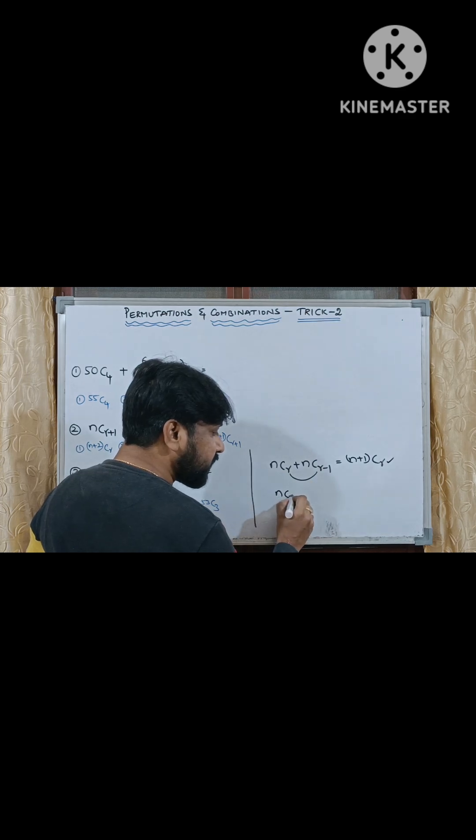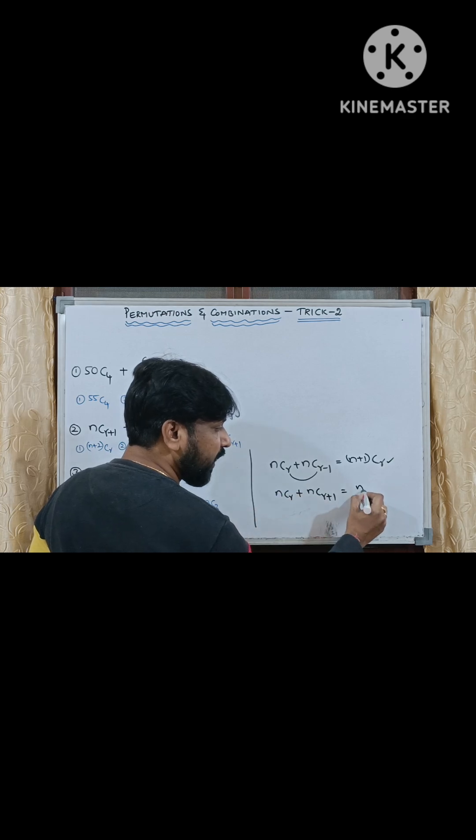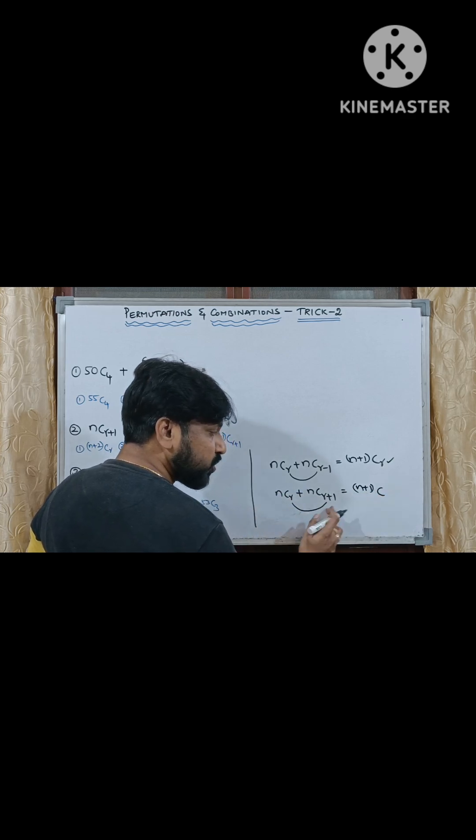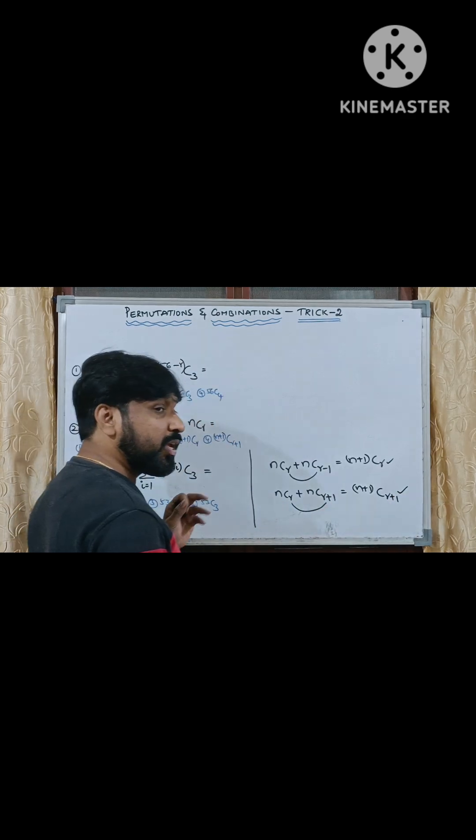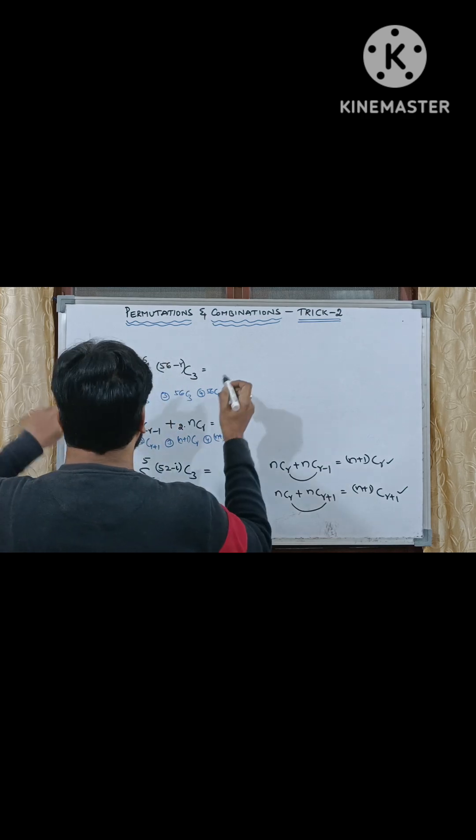In the similar way one more formula is there. NCR plus NCR plus 1 can be written as - same logic N, N is there, N plus 1 we can write. C from these two. Difference is how much? 1. Which is the bigger one? R plus 1 here. That is what you can say: N plus 1 C R plus 1. How we can solve here?